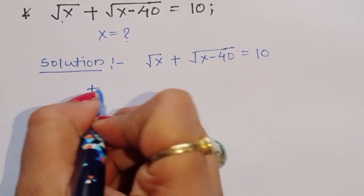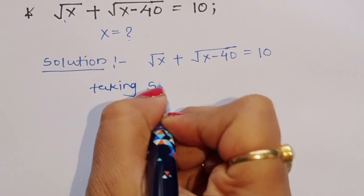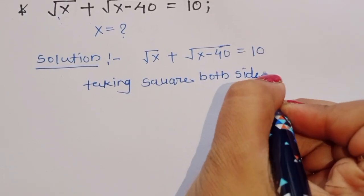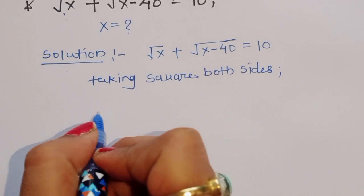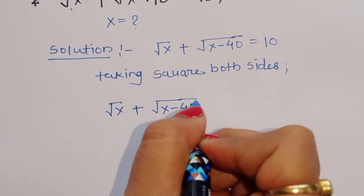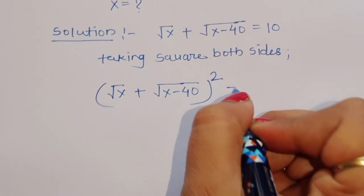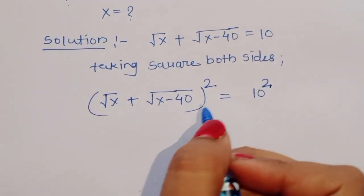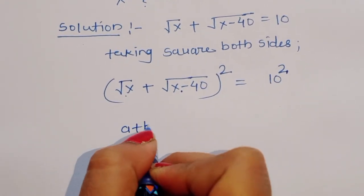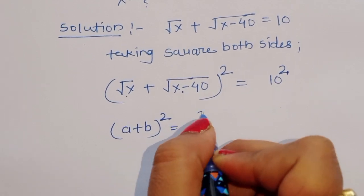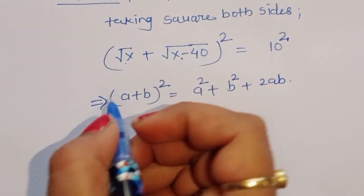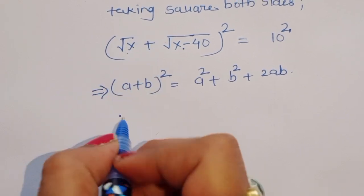We can take square of both sides. Then we will get square root of x plus square root of x minus 40, whole squared, is equal to 10 squared. This is in the form of (a+b)², and the formula is a² plus b² plus 2ab.